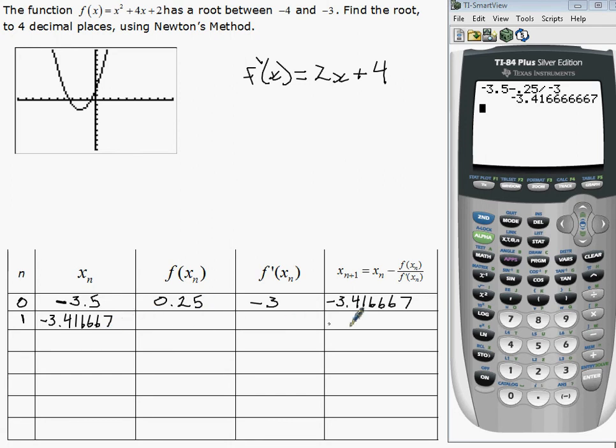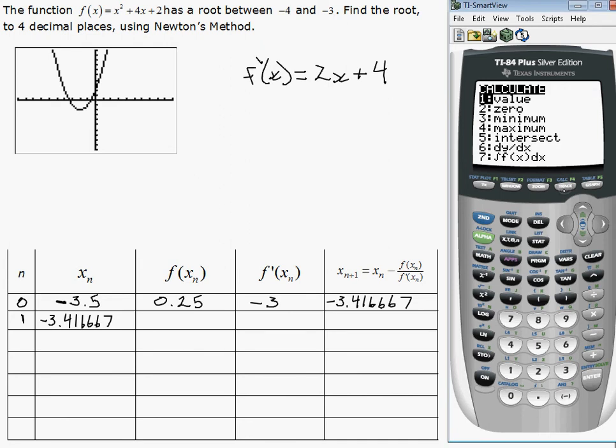So now we'll calculate these two, well actually all three, now using this instead of negative 3.5. So if we go back to our calculator, we're going to do the second function, calculate the value at negative 3.416667.